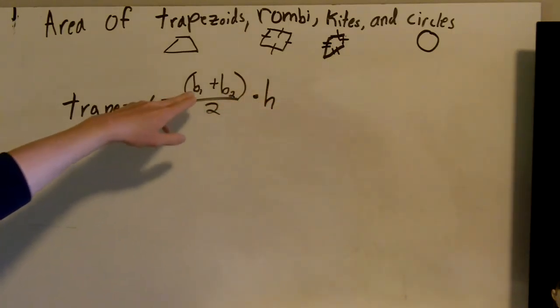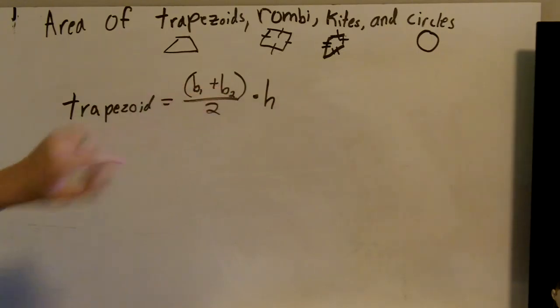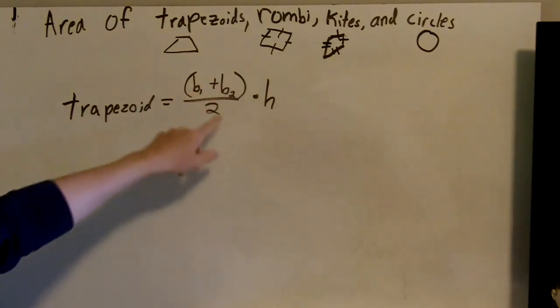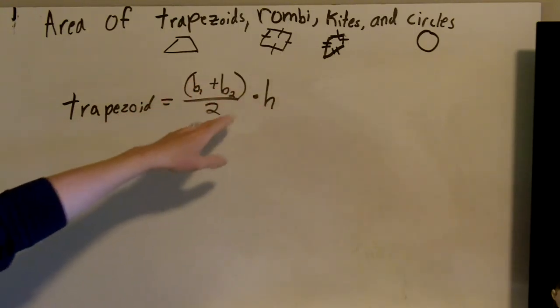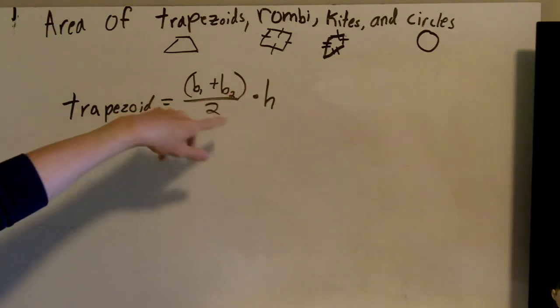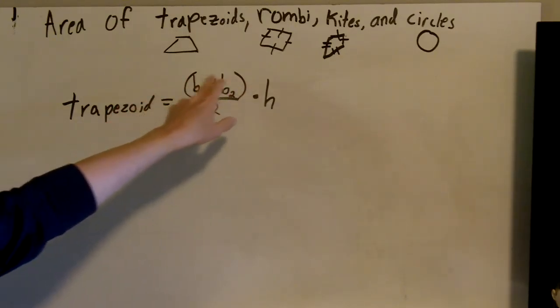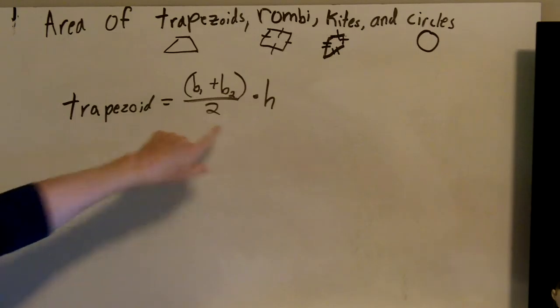When you put this in a calculator, make sure you actually add those together first, figure out your answer, then divide by two. Because if you just plug it in like this, you may end up doing base one plus base two divided by two. Which we don't want that, we want the sum, add them together, then divide by two.